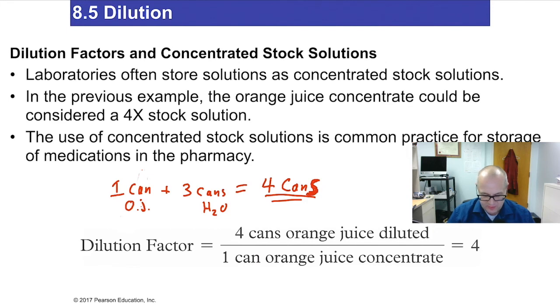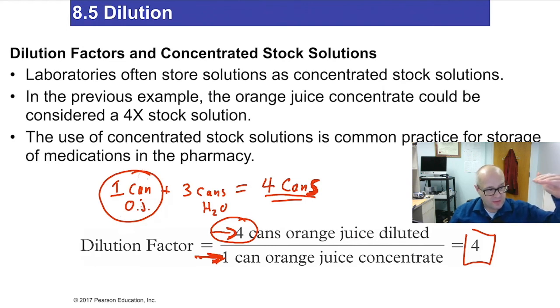So what you do for a dilution factor is you put down the volume you started with. The volume you started with is on the bottom. The volume you end up with is on top. So here we started with one can. That goes on the bottom. We ended up with four cans. That goes on top. So our dilution factor is four. So we diluted it by a factor of four. In other words, we took one, it became four. If we take two, it'll become eight. Three will become 12. You just multiply. Pretty simple.